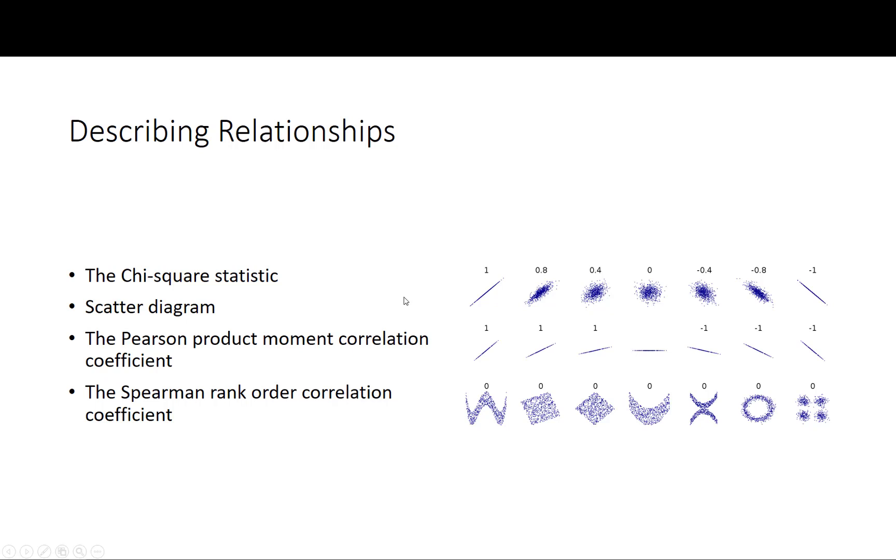In terms of describing relationships, the next video I am going to make is going to talk about the following: the first two of these, and then I will do a separate video on the correlation analysis which are the Pearson product moment and the Spearman rank order. So the next video will deal with chi-square statistic and the scatter diagram as displays of association.